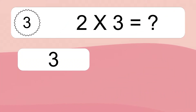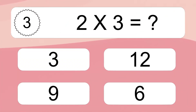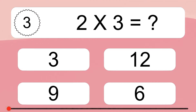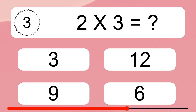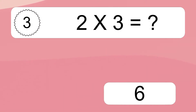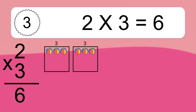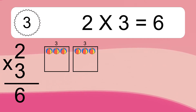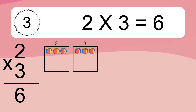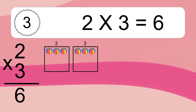Two times three equals what? Two times three equals six. We have two boxes and each box has three colorful balls inside. If you count all the balls in all the boxes together, you will have two times three balls. This equals six balls.